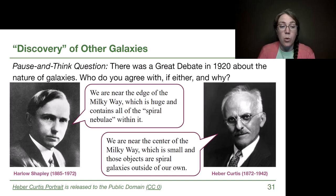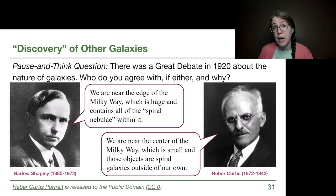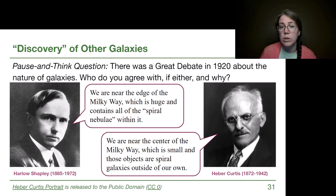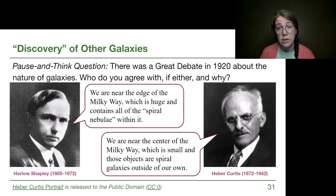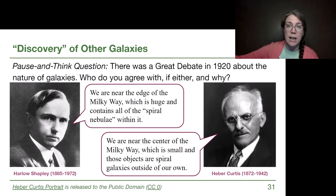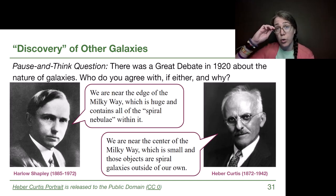It's possible to be partially right, but if we still have something wrong we have to identify that. Harlow Shapley's statement was: 'We are near the edge of the Milky Way, which is huge and contains all of the spiral nebulae within it.' His map did show us that we're near the edge of the Milky Way, and our updated maps show we are much closer to the edge than the center. However, those spiral nebulae are much bigger and much farther away than they knew in 1920, so he's partially right but we can't agree with him.